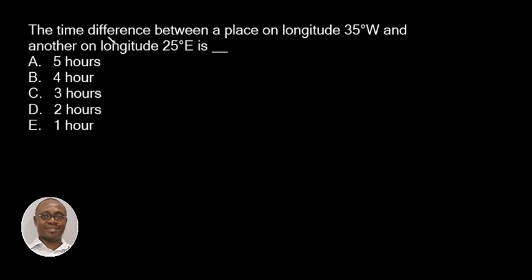This is Germ Geography 27 and the question goes there. The time difference between a place on longitude 35 degrees west and another on longitude 25 degrees east is.